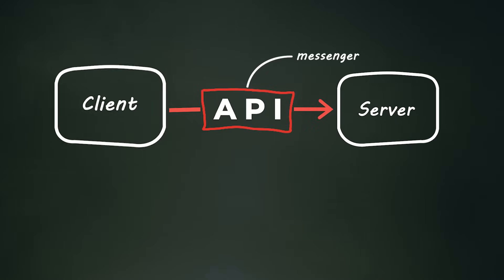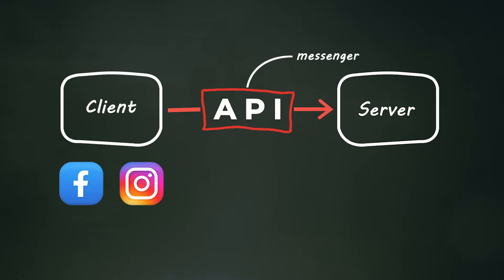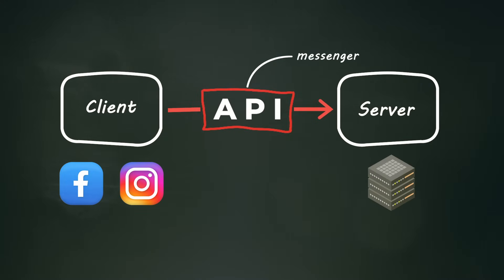The client, which can be your favorite app — for example, Facebook or Instagram — and the server is where you store all the data such as your personal information, pictures, friend list, and so on.